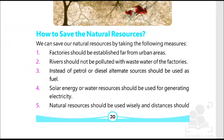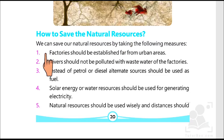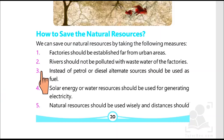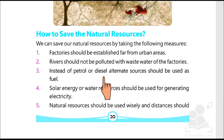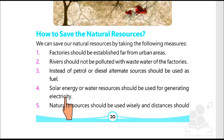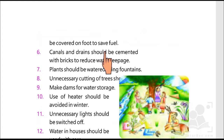Since the unit is about conservation of natural resources, here are certain ways of saving them. We can save our natural resources by taking the following measures: first, factories should be established far from urban areas; second, rivers should not be polluted with wastewater of factories; third, instead of petrol or diesel, alternate sources should be used as fuel; fourth, solar energy or water resources should be used for generating electricity; fifth, natural resources should be used wisely and distances should be covered on foot to save fuel.